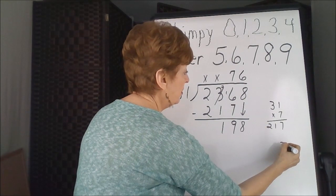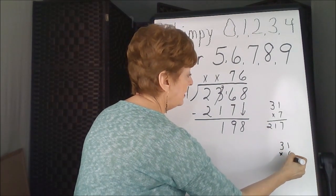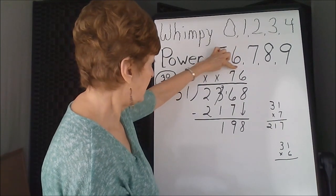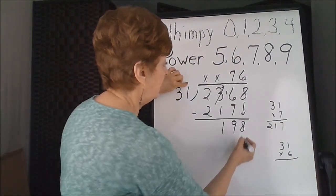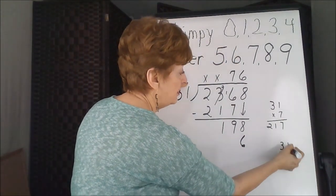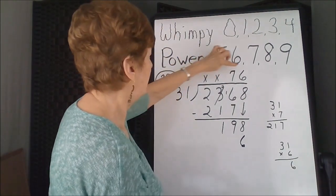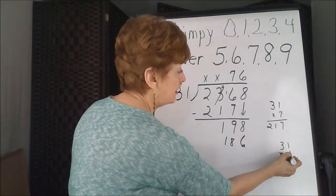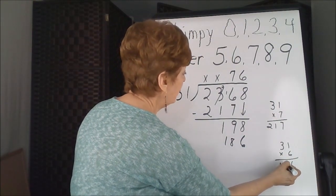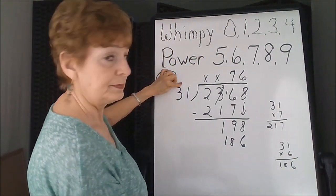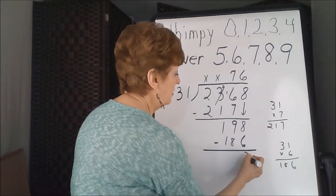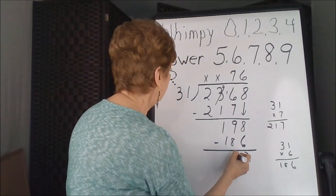Our problem would be 31 times 6, if you were doing the side calculation. 6 times the 1's column is 6. 6 times the 10's column is 18, 2 and 1.